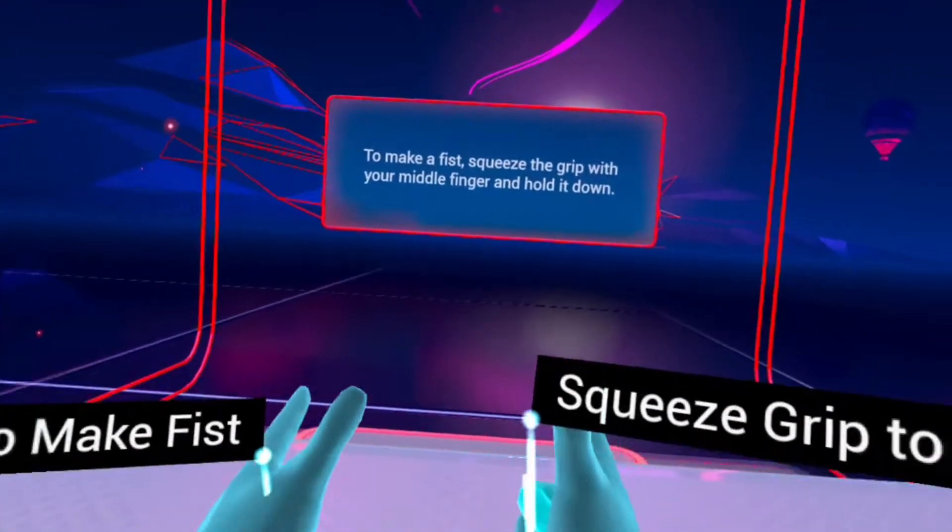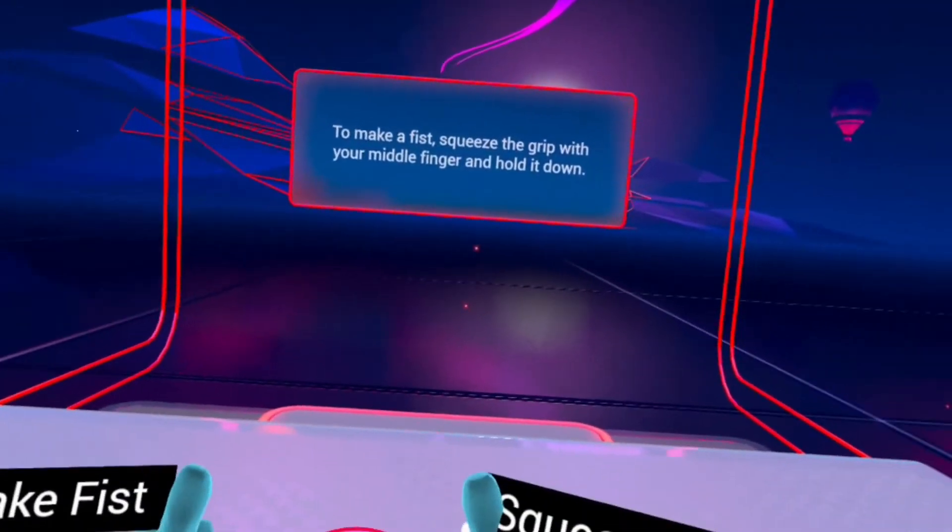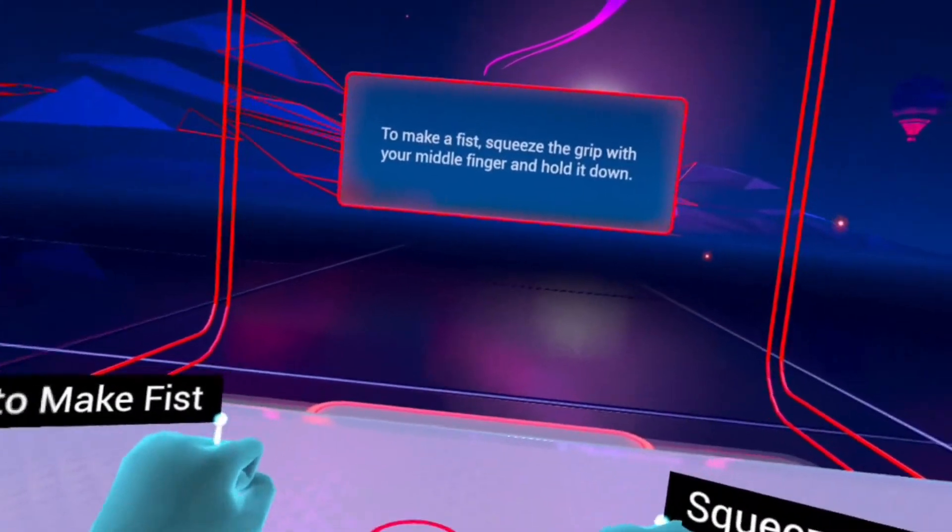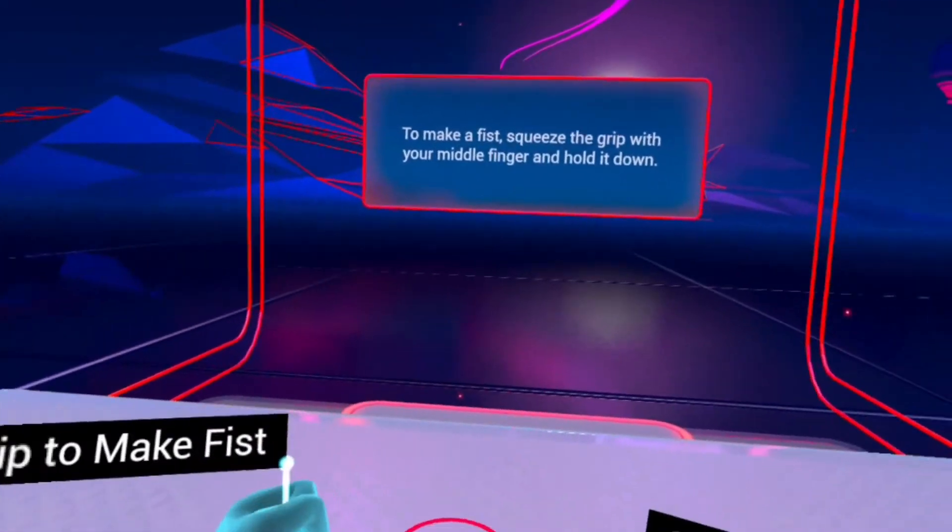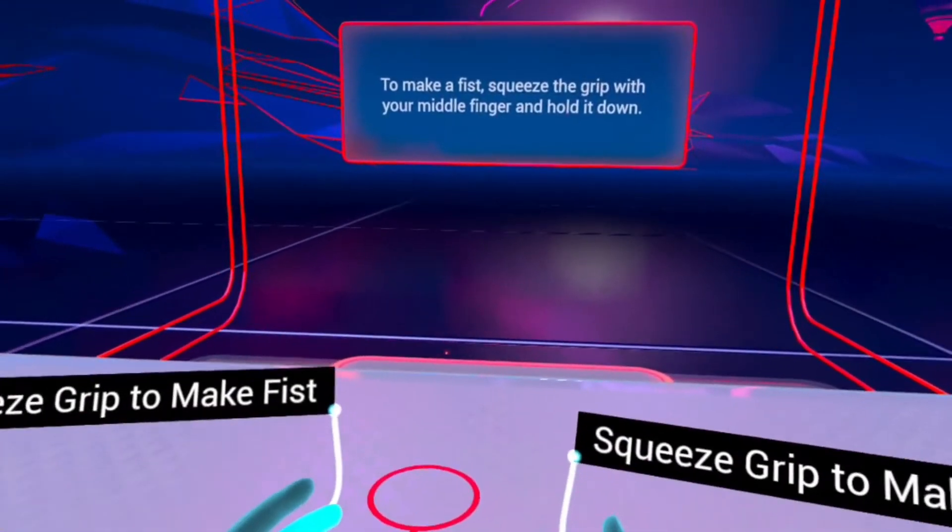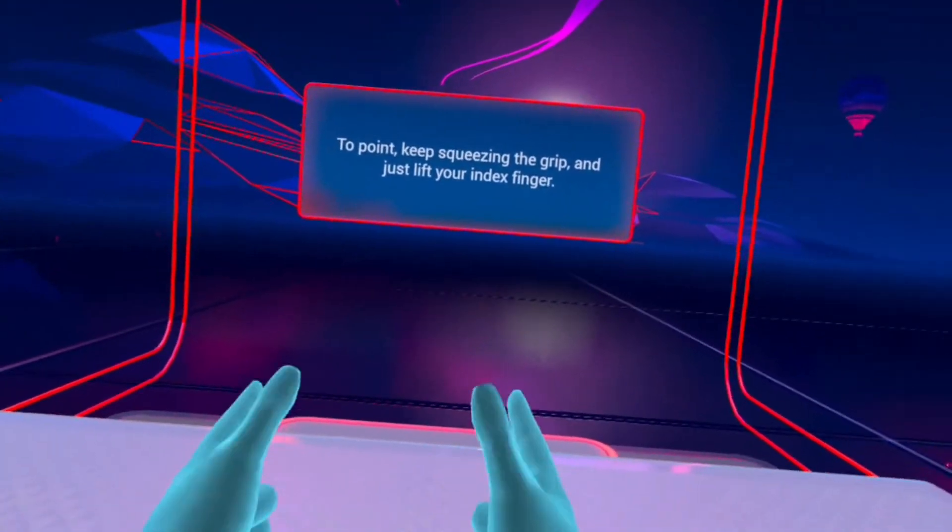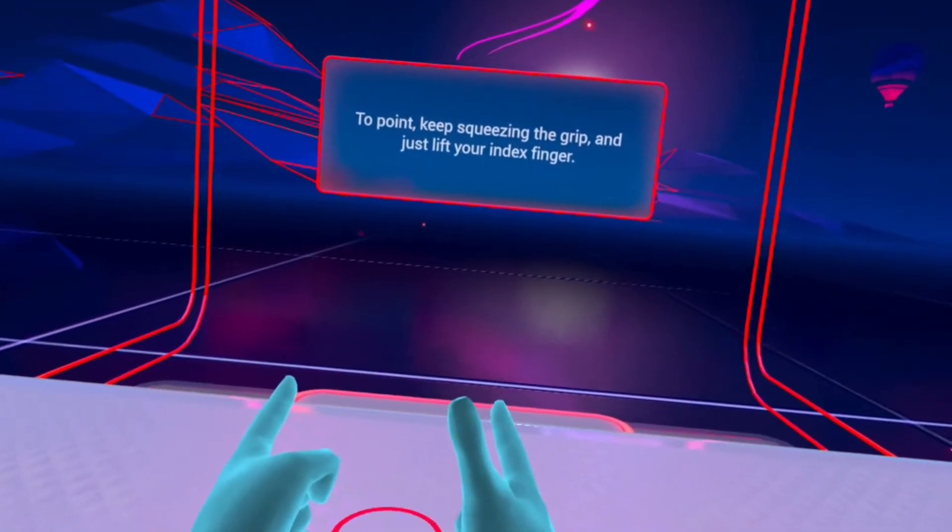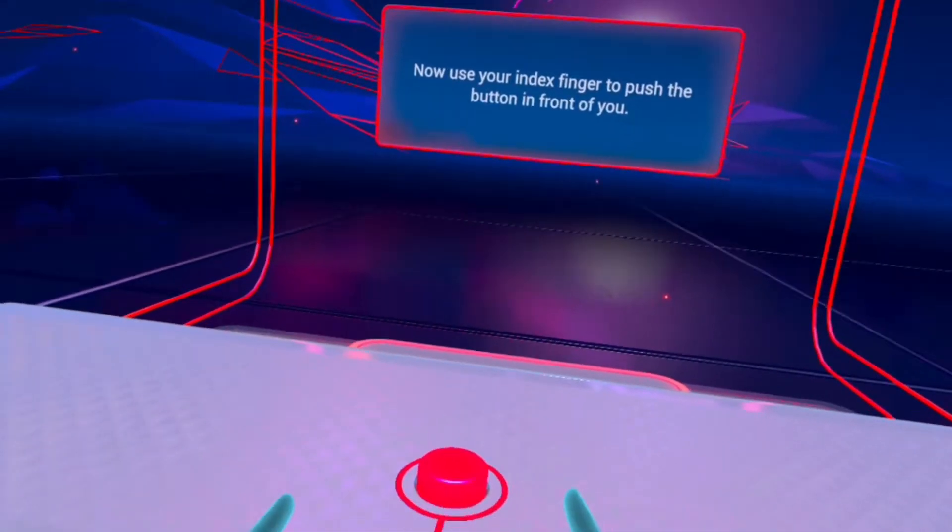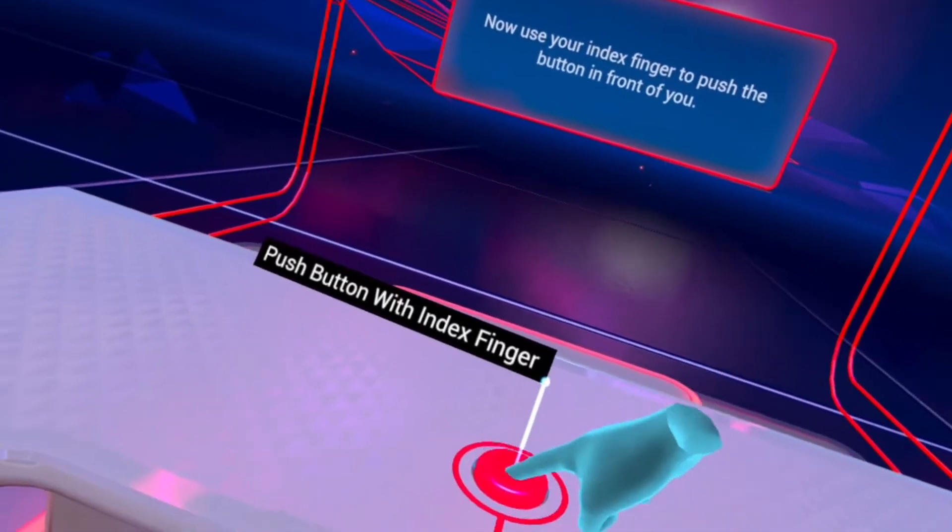To make a fist, squeeze the grip with your little finger and hold it down. To point, keep squeezing the grip and just lift your index finger. Now use your index finger to push the button in front of you.